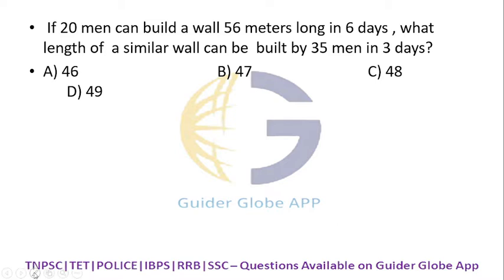If 20 men can build a wall 56 meters long in 6 days, what length of a similar wall can be built by 35 men in 3 days? This is related to time and work. What is the input?